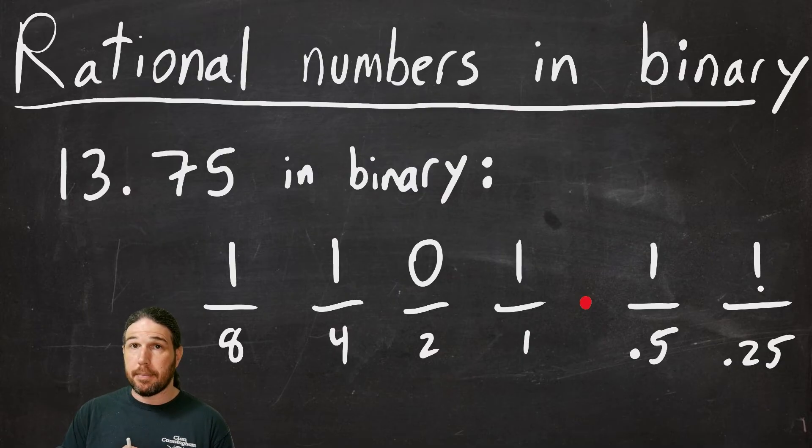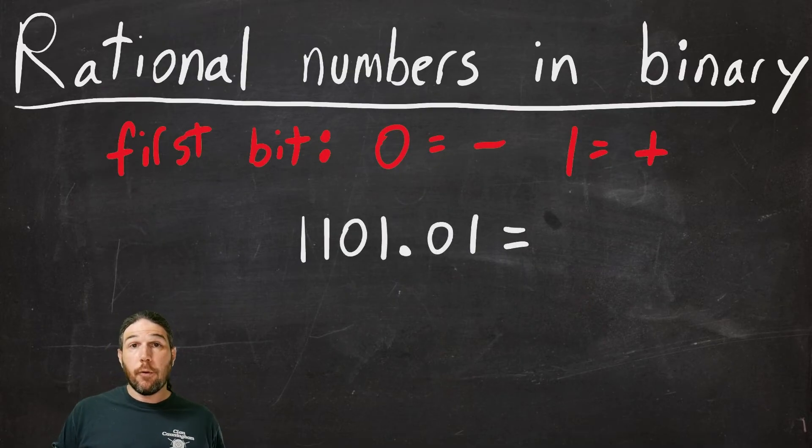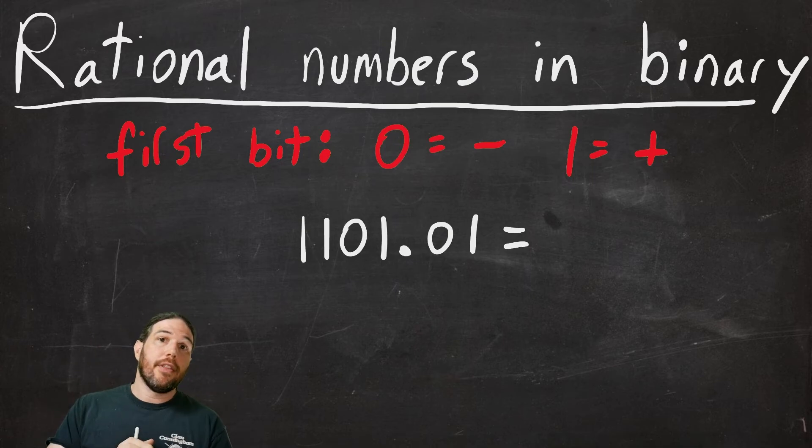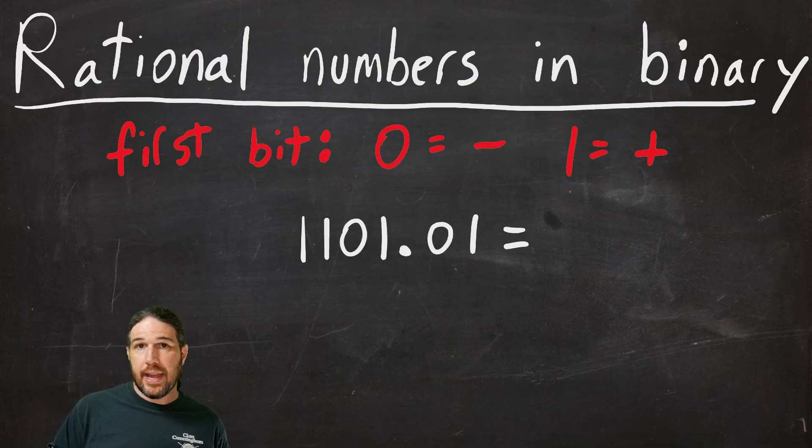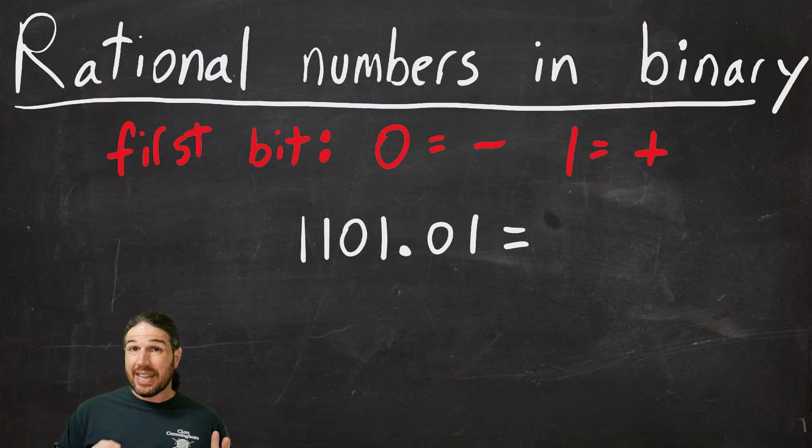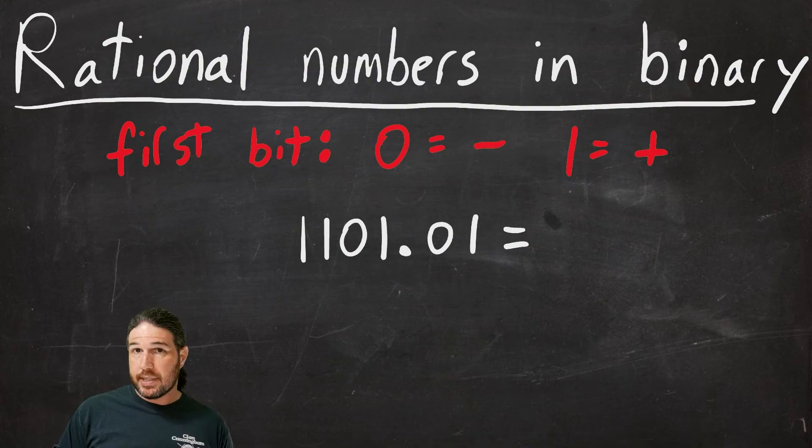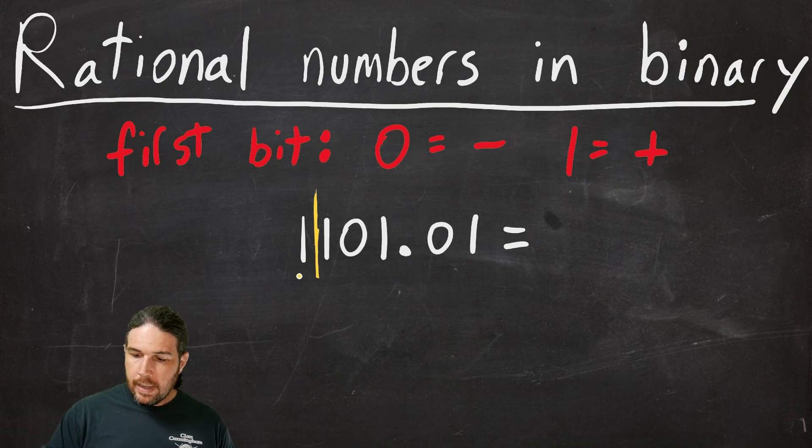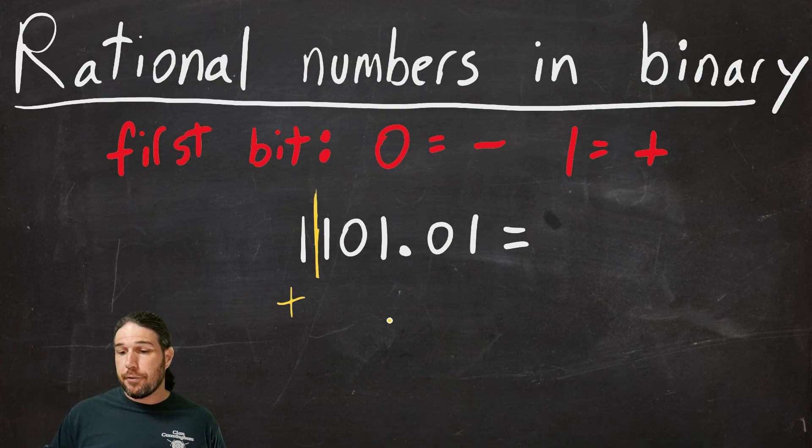For this next example problem, we are going to assume that the first bit determines the sign of the number rather than adding value to the number itself. So the very first bit, if it's a zero, the number is negative. If it's a one, the number is positive. Again, the only reason this works is because I told you at the beginning of the problem that this is how it works. Otherwise, you wouldn't know that the first bit was supposed to represent positive or negative. We're going to go ahead and section off that first bit. And because it is a one, that means the number that follows is positive. After that, the rest of it falls exactly the same as before. This is the one spot, the two spot, and the four spot. This is the one half spot and the one fourth spot.